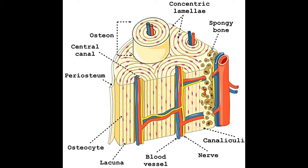The Haversian canal is surrounded by lamellae — concentric rings of a strong bone matrix. Mineral salts and collagen fibers lend strength to the matrix; collagen fibers in a lamella run parallel to one another, but run in different directions in adjacent lamellae, which also strengthens the osteon. The presence of mineral salts such as calcium and phosphates makes the bone hard, while collagen fibers strengthen the matrix. Between the lamellae are small spaces called lacunae, where osteocytes are located. Tiny channels called canaliculi connect the lacunae, supplying nutrients to the osteocytes and removing waste. The remnants of previous concentric lamellae found between osteons are referred to as interstitial lamellae.